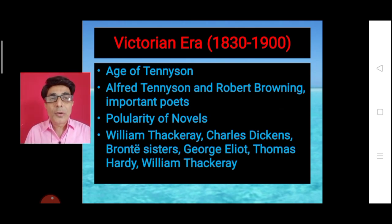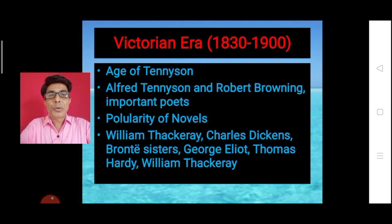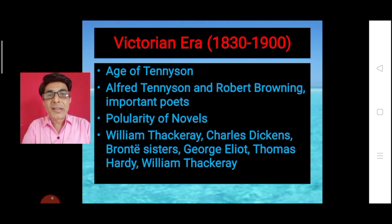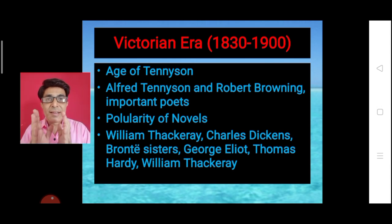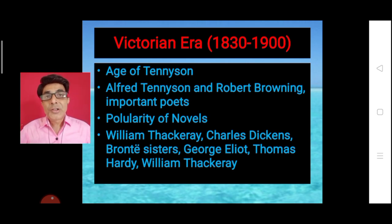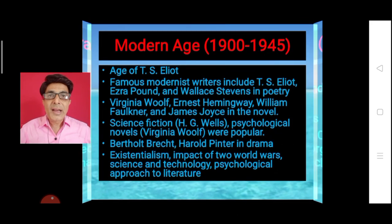From 1830 to 1900, a long period of 70 years is known as the age of Queen Victoria — the Victorian Age. It is also known as the age of Lord Alfred Tennyson, who became the Poet Laureate of England during this period. Alfred Tennyson and Robert Browning published lyrics full of fantasy. Novels also continued to be popular. Important novelists of this period include William Thackeray, Charles Dickens, the Brontë sisters, George Eliot, and Thomas Hardy.